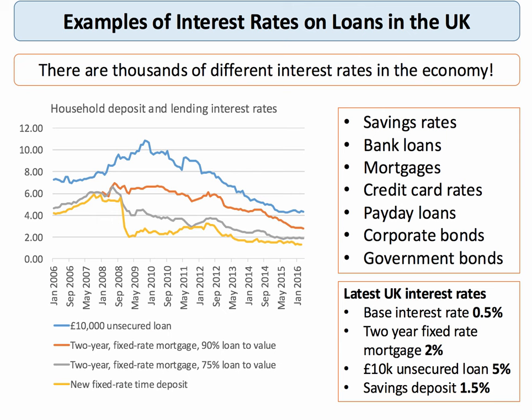This chart tracks household savings rates — otherwise known as deposit rates — and lending rates for the UK through to March 2016. Since 2008 there has been a significant fall in most interest rates. The yellow line shows the long-term savings deposit rate, which has been stuck below 2% for several years. Savers are really not getting a high rate of return. Mortgage rates have come down. A 90% loan-to-value mortgage means you find a 10% deposit; a 75% loan-to-value means you find 25%, so that loan is cheaper.